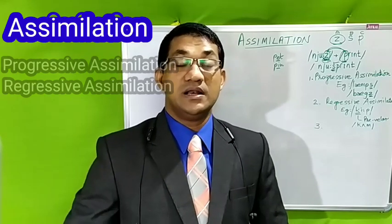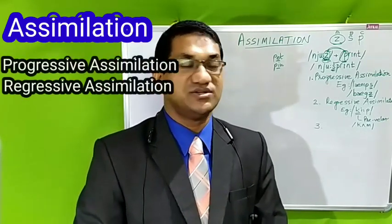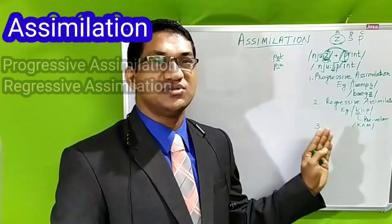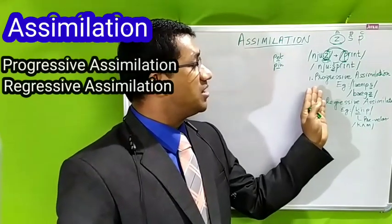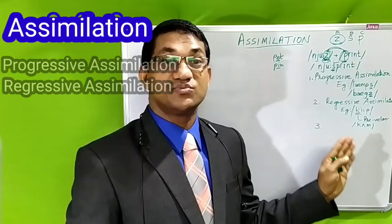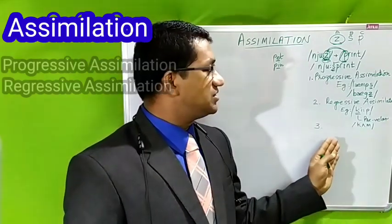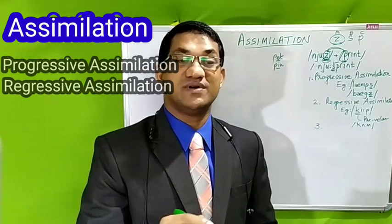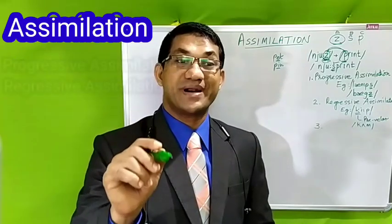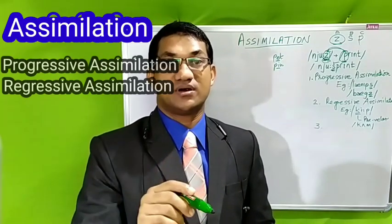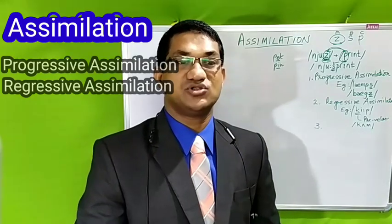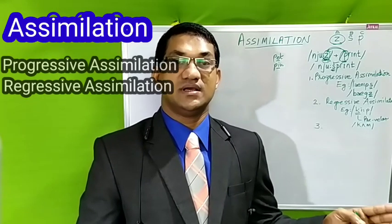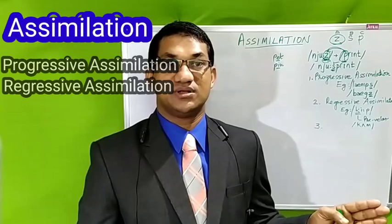We have to understand a little more about assimilation. Initially, I am introducing two types. One is progressive assimilation. The forward spread of a feature — that is, the features of a phoneme affect the phoneme following it — is called progressive assimilation.